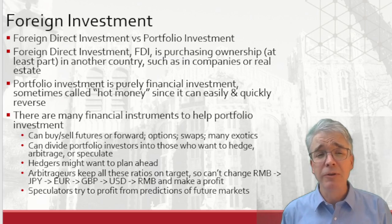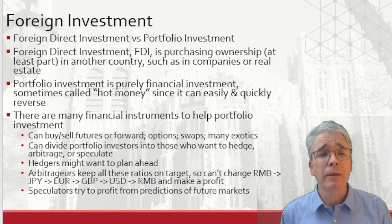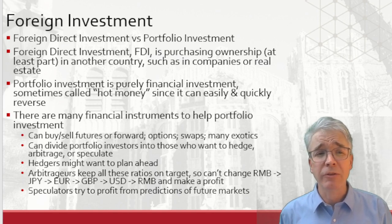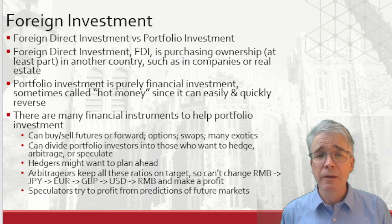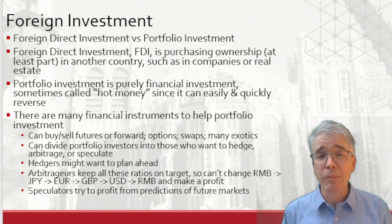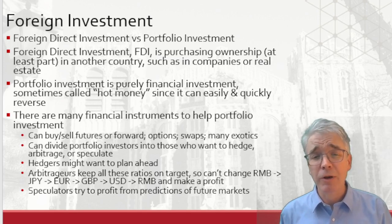If a company knows they'll be paid euros in six months, they can lock in a price today — that helps them lock in their profit for the transaction and not worry if exchange rates move against them. There are options, swaps, and many more exotic instruments. Some exist because firms genuinely have complicated financial transactions and want to avoid foreign exchange risk. A US manufacturer likely has no useful opinion on whether exchange rates will go up or down — they just want to lock in a rate since many costs are already paid. That's hedging — they want to hedge against a real position.